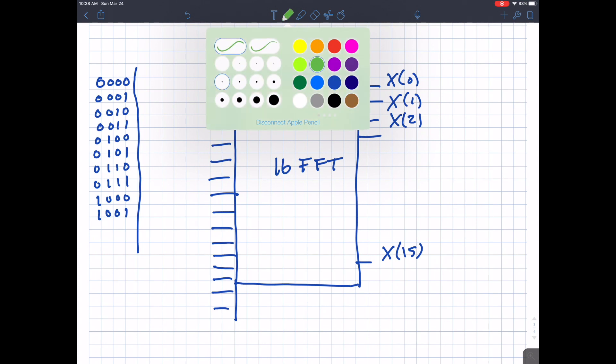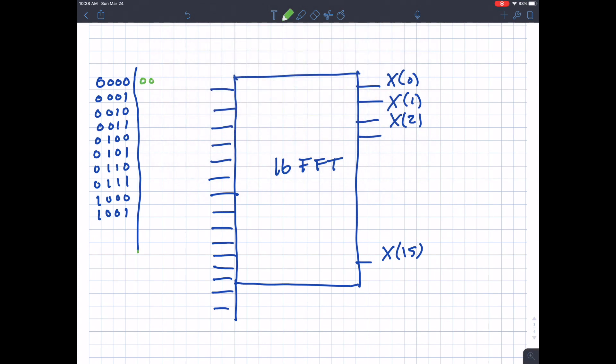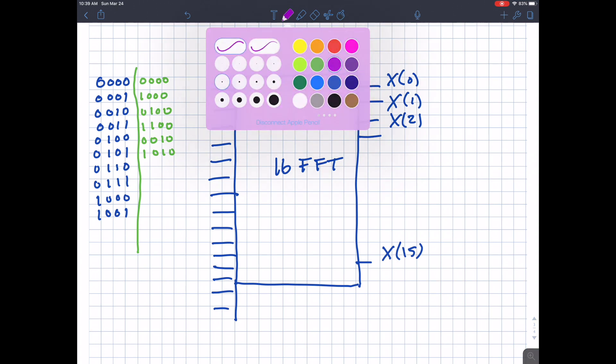What would happen if we reverse the digits? So I'm going to put the reverse digits in green. Reverse all zeros, you get zero. Then this would be one, zero, zero, zero, which is, you know, eight. And then the next one would be zero, one, zero, zero. And then one, one, zero, zero. And then zero, zero, one, zero. So you see what I'm doing is I'm reversing everything. One, zero, one, zero. From there, you can calculate the input order to a 16 point DFT.